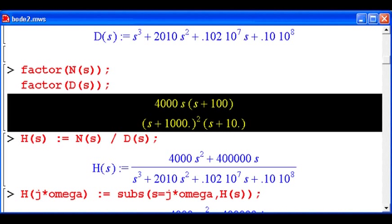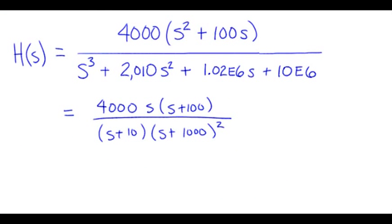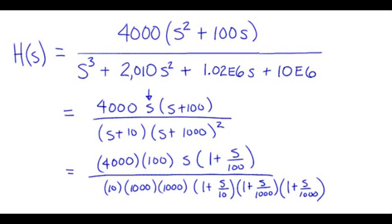We need to operate on this a bit more. We need to make each of the zero and pole terms look like 1 plus s over something. Notice there's an exception to that rule. If you have an s by itself, you just leave that there. So we have this result, where we have two zeros, three poles.